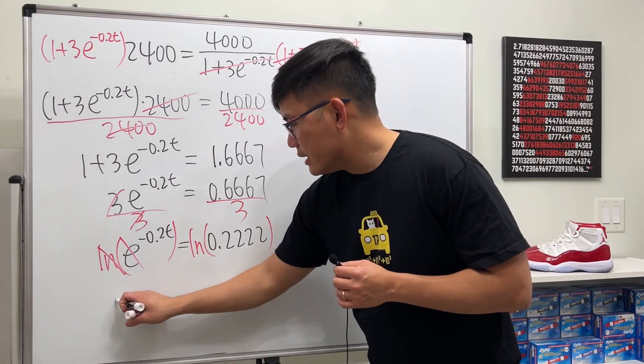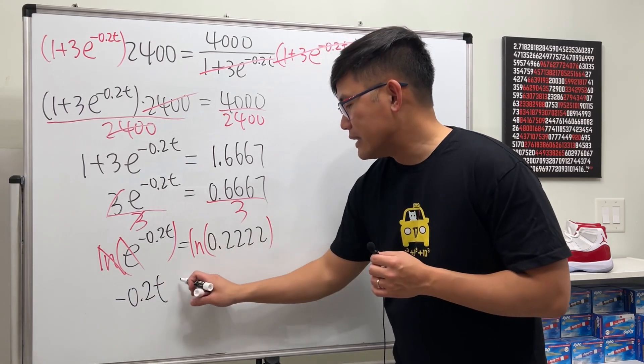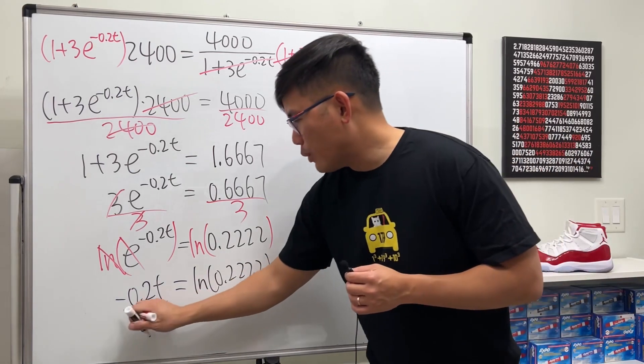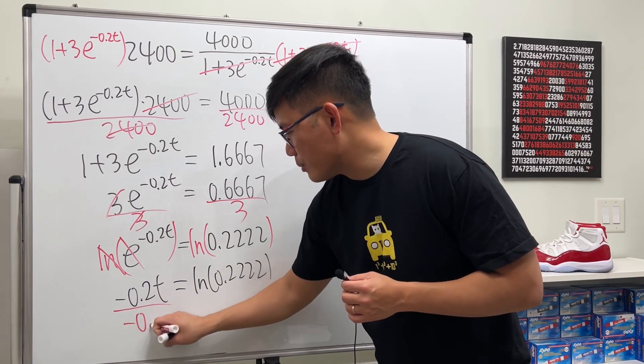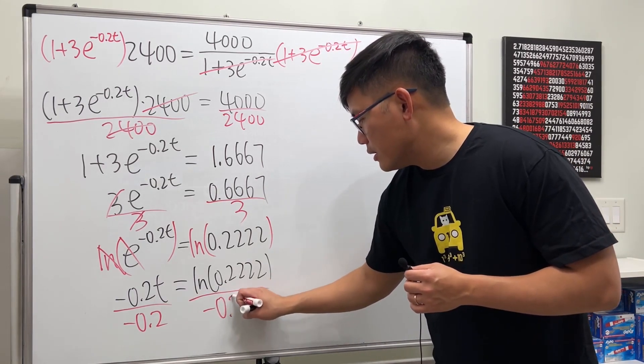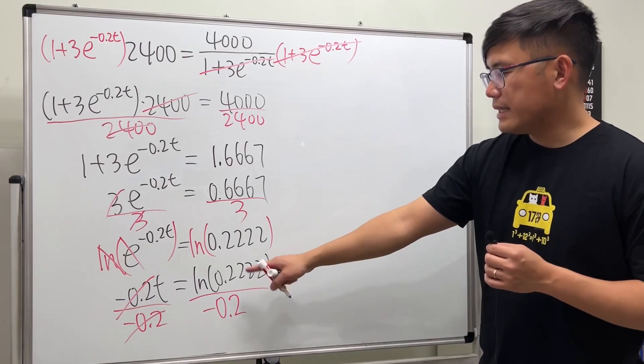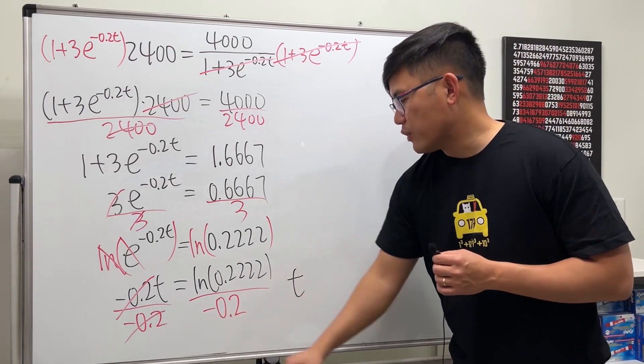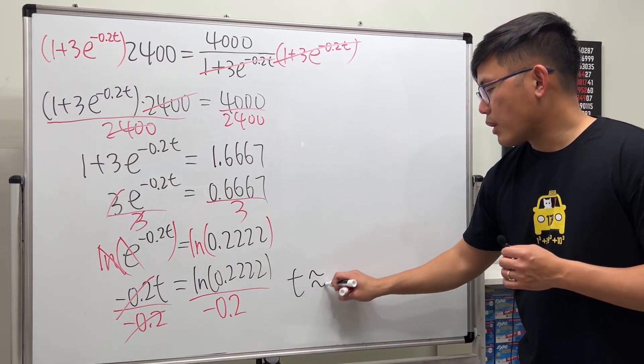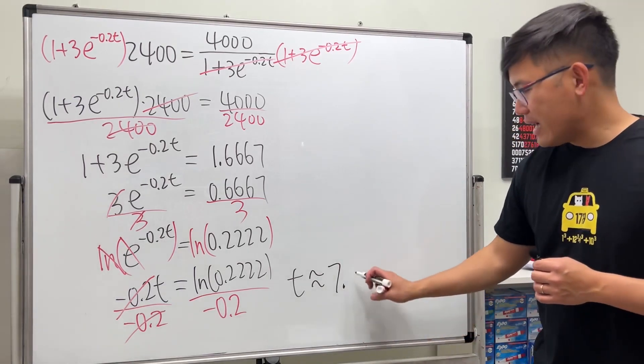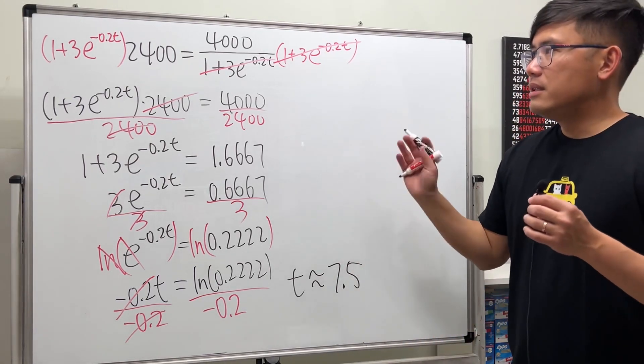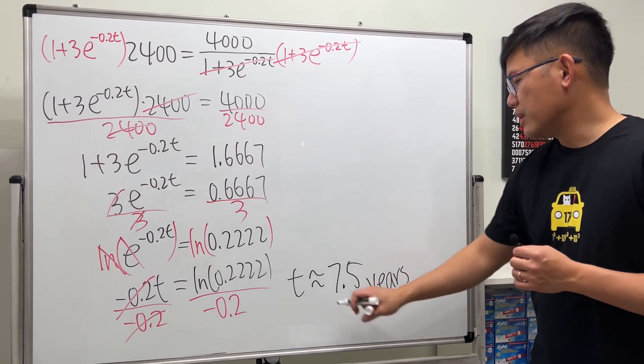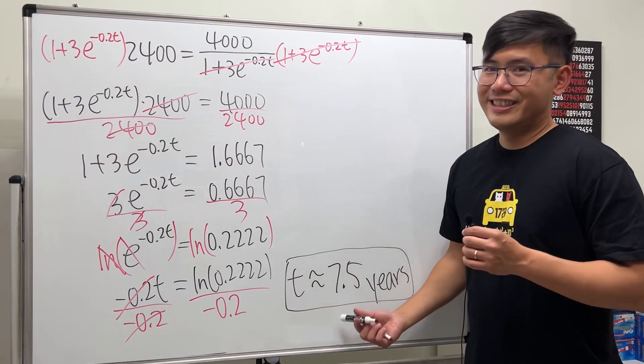I'll write it like this for now because I have to divide both sides by negative 0.2. This and that cancel. Go ahead and use the calculator and enter this. If you work out the whole thing and be careful with the negative, you'll get approximately 7.5. But this question is just about how many years, so 7.5 years is a pretty good answer for that.